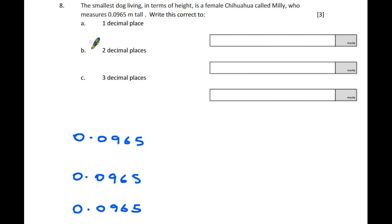Question eight: The smallest living dog in terms of height is a female chihuahua called Millie, who measures 0.0965 meters tall. Write this correct to one decimal place. One decimal place is the zero, but we look at the next number - the nine. It's five or above, so it rounds up, making the answer 0.1.